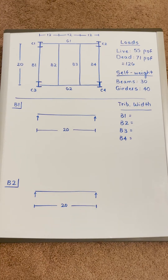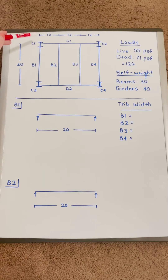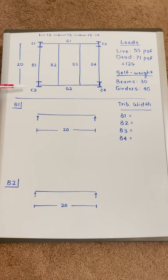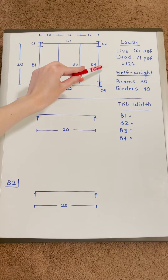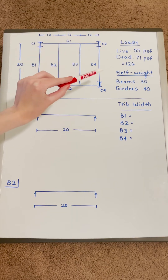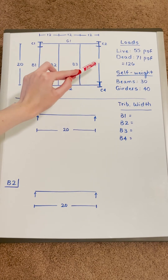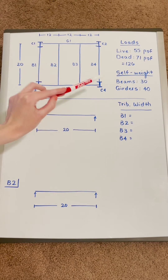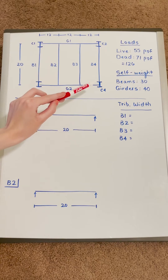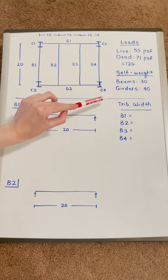Here's another example. This is the top view of a structure — you've got beams here, girders here, and then columns where the letter I's are. The beams are spaced 12 feet apart and they're 20 feet long. For the loads, you have 55 PSF of live loads and 71 PSF of dead loads — that stands for pounds per square foot — which together is 126 PSF. You also have to account for the self-weight of each member: the beams are 30 pounds each and the girders are 40.